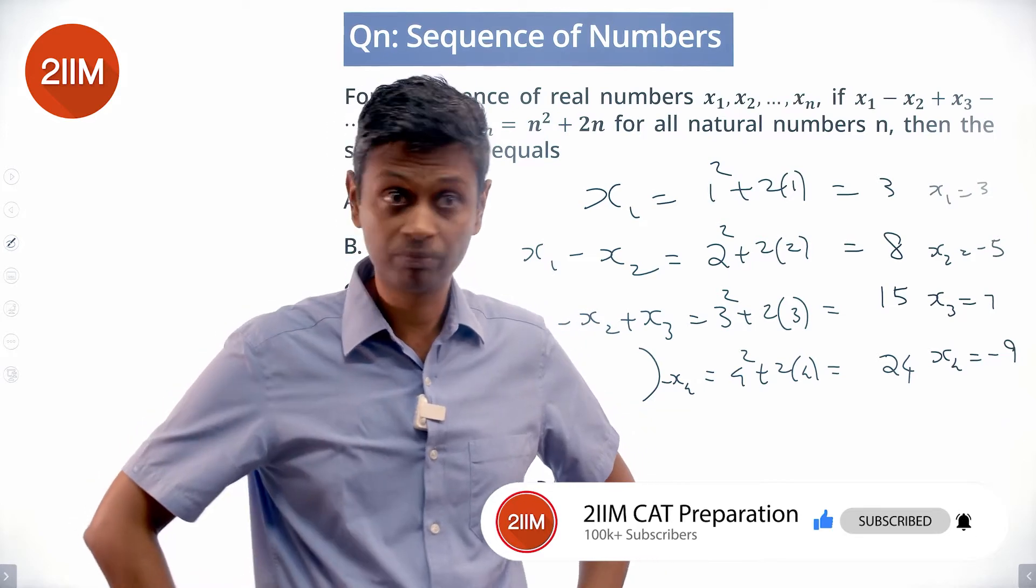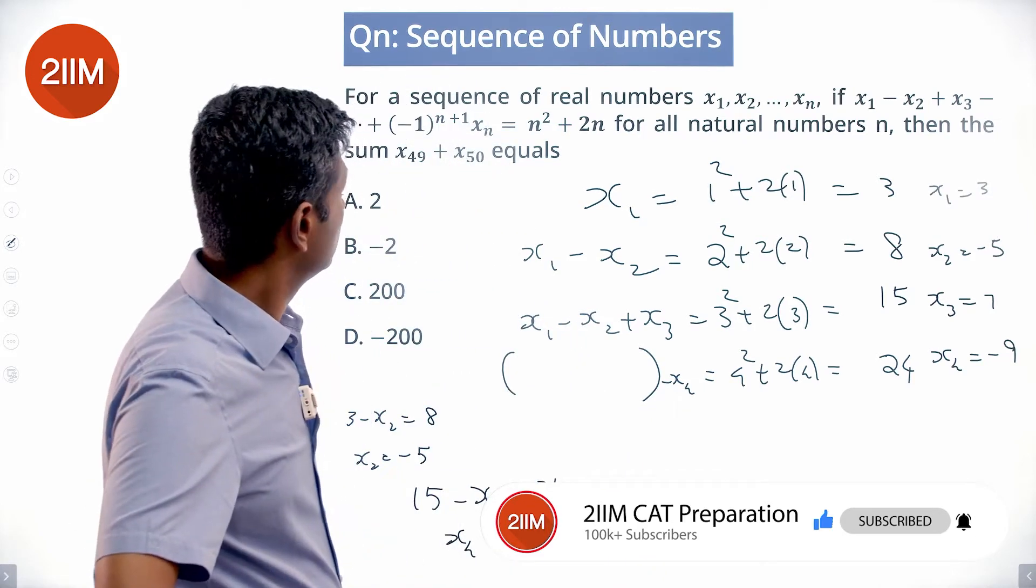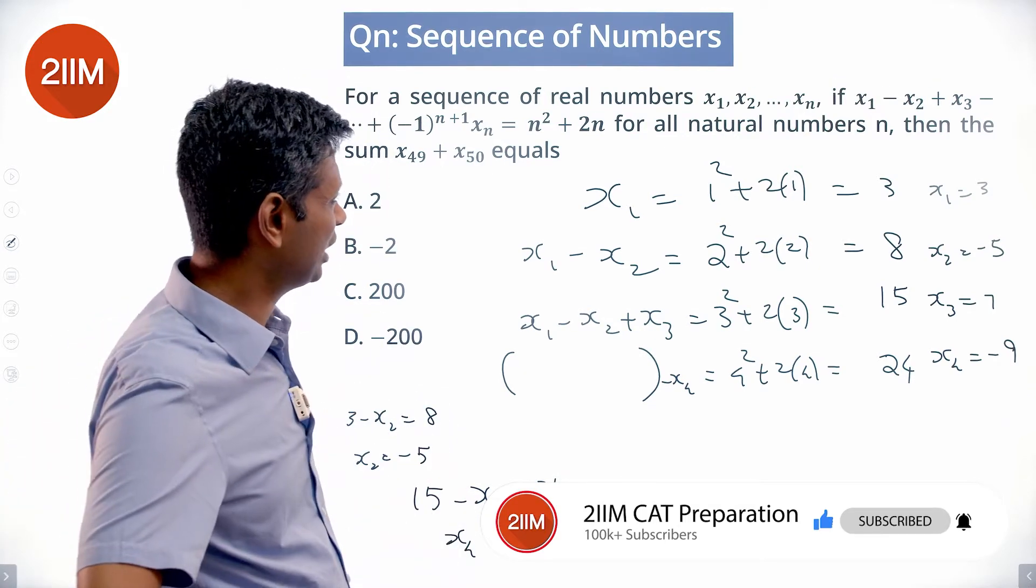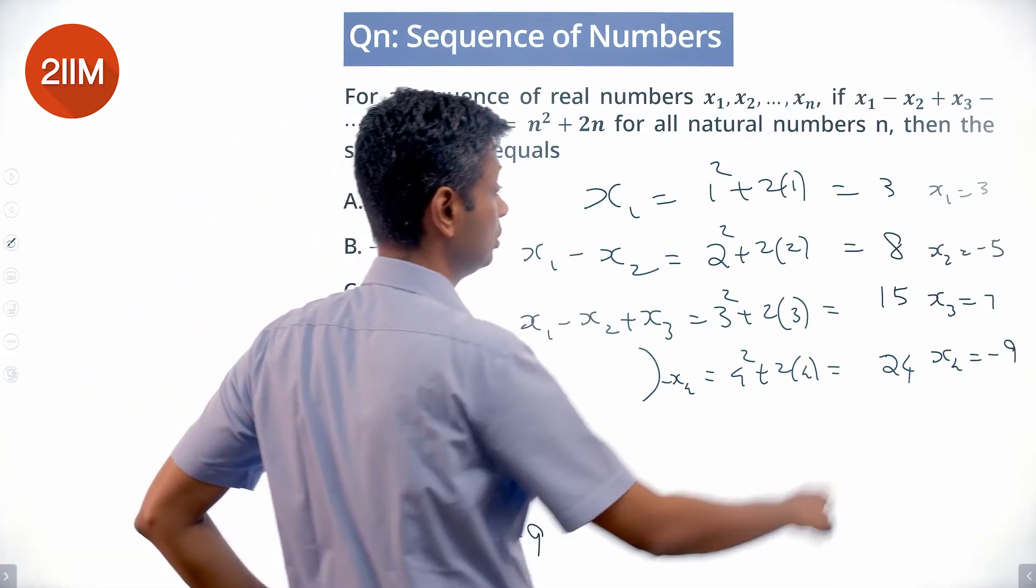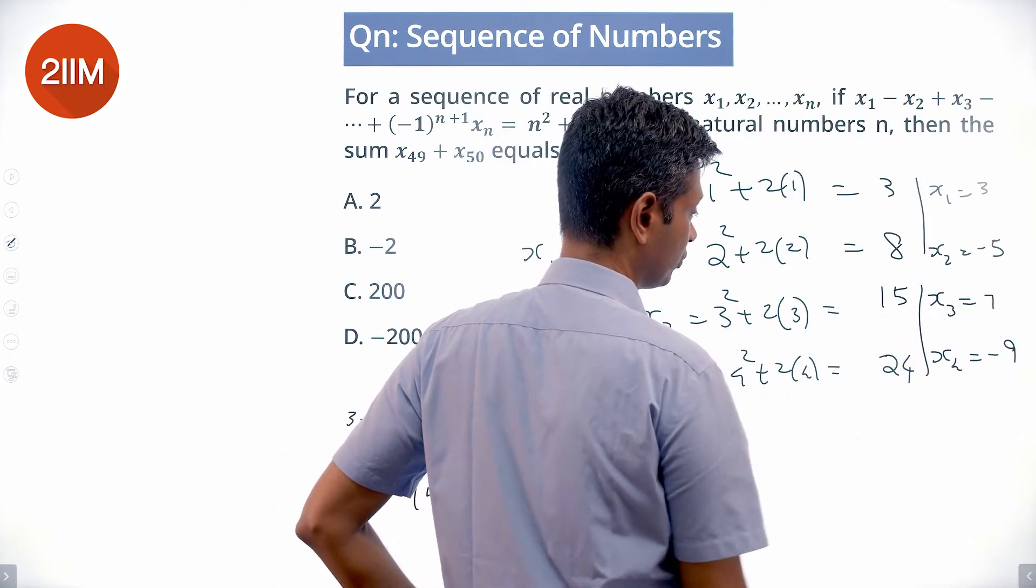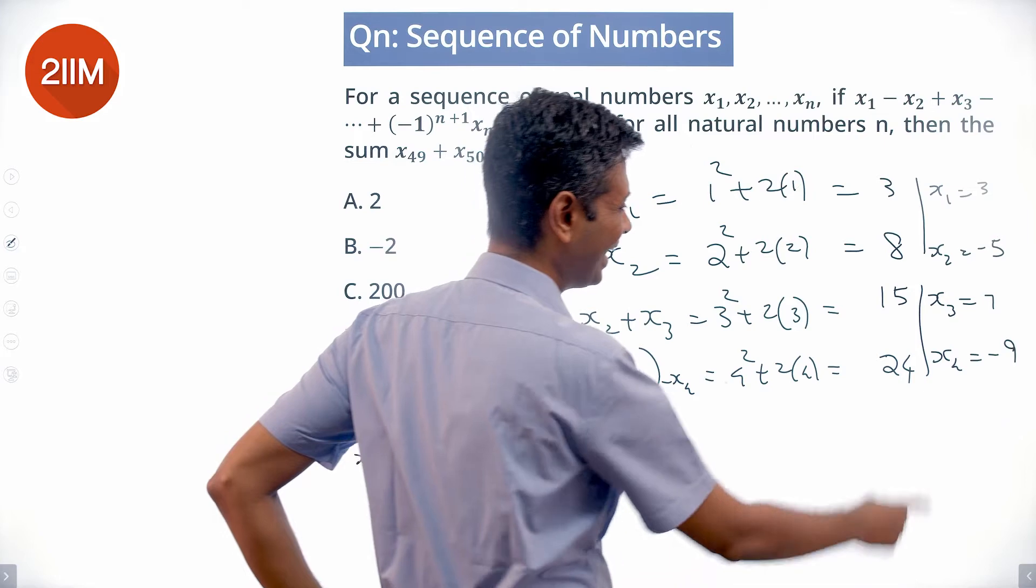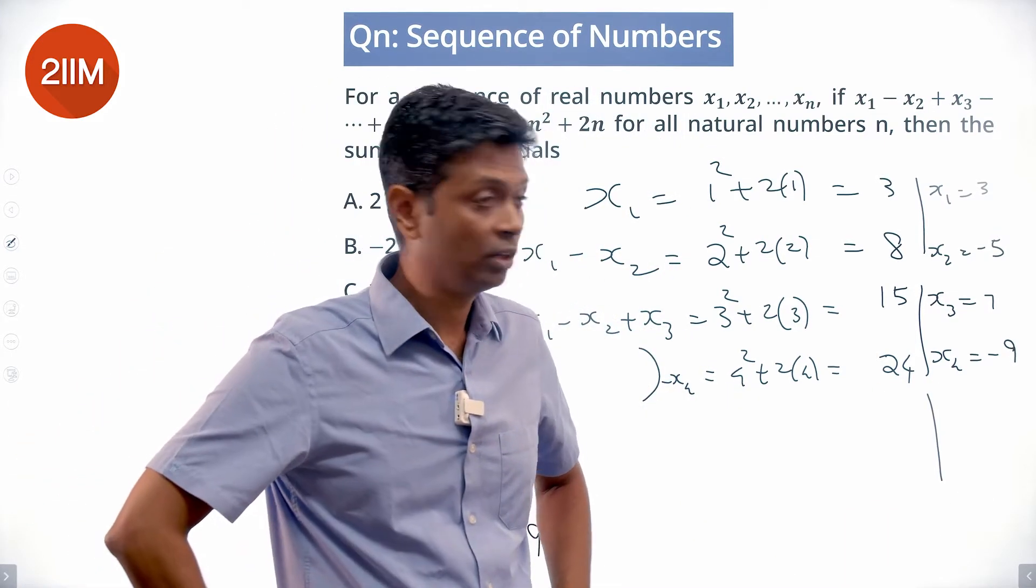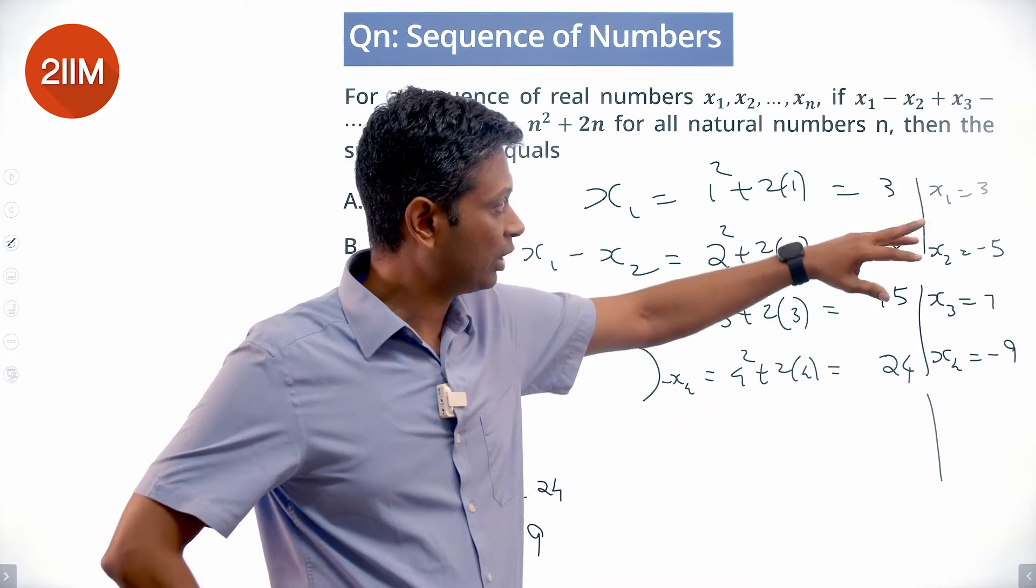Then we sum x49 plus x50 equals... very interesting. x1 plus x2 is minus 2, x3 plus x4 is minus 2, x5 plus x6 will be minus 2. Every pair of adjacent numbers that we're adding up will add up to minus 2: 3 minus 5 equals minus 2, 7 minus 9 equals minus 2, 11 minus 13 equals minus 2.